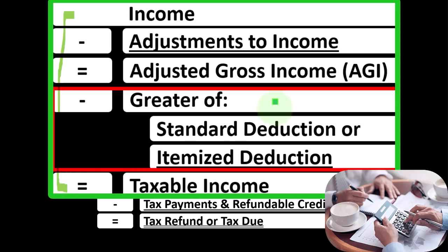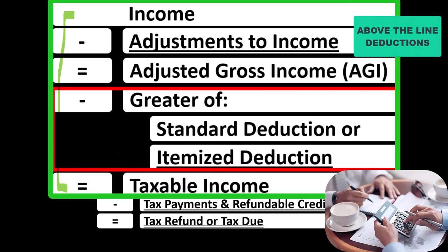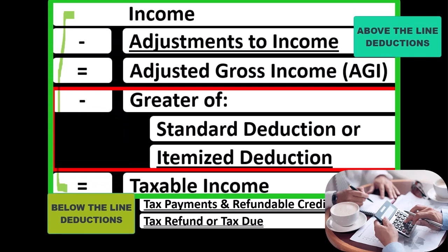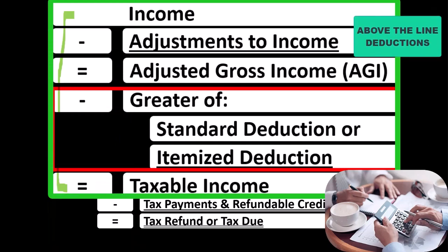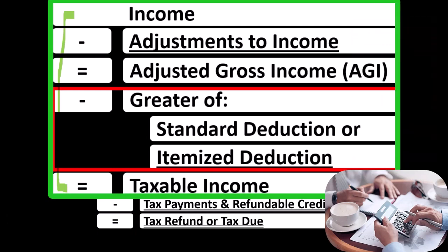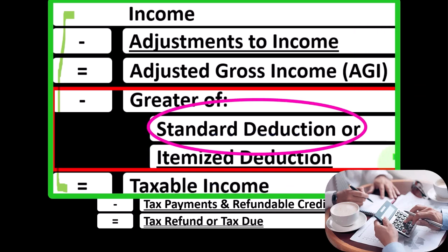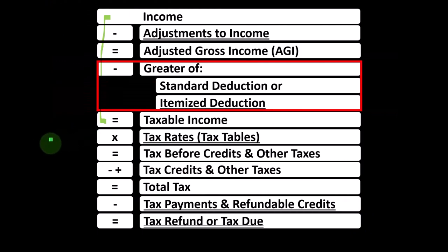The difference between the above-the-line deductions — adjustments to income — and the below-the-line deductions is that the above-the-line deductions do not need to clear a hurdle such as the standard deduction before we get a tax benefit from them, whereas the itemized deductions will need to be greater generally than the standard deduction before they become beneficial to us.